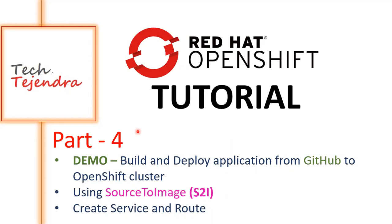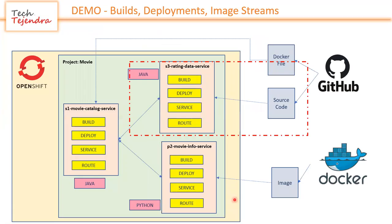In this tutorial we will discuss how to deploy an application from GitHub. First we will build and then deploy, using the S2I - Source to Image - strategy. Let's go to our diagram.